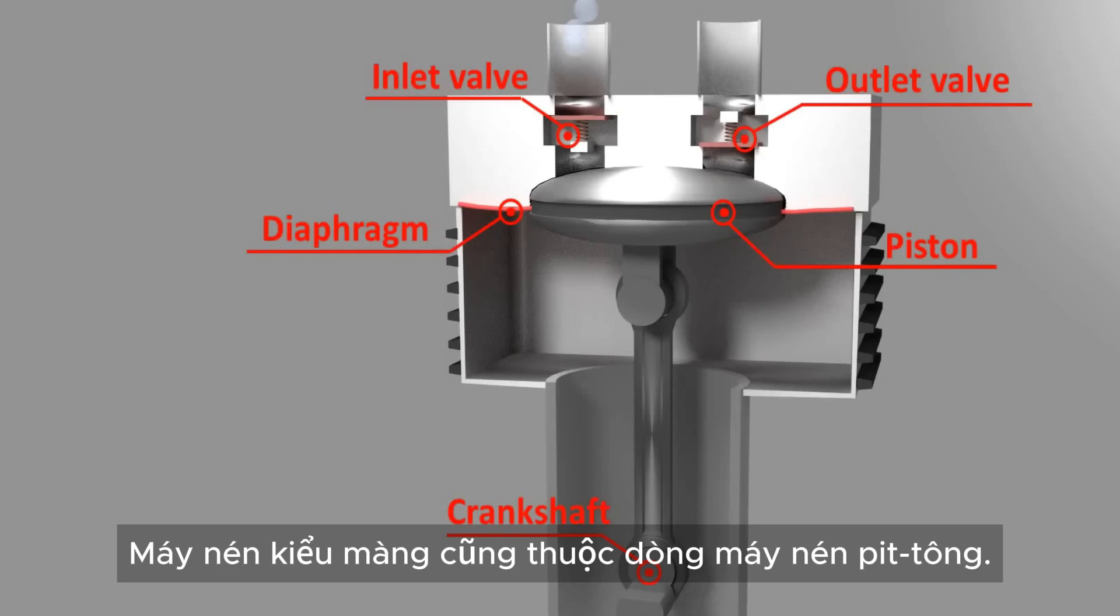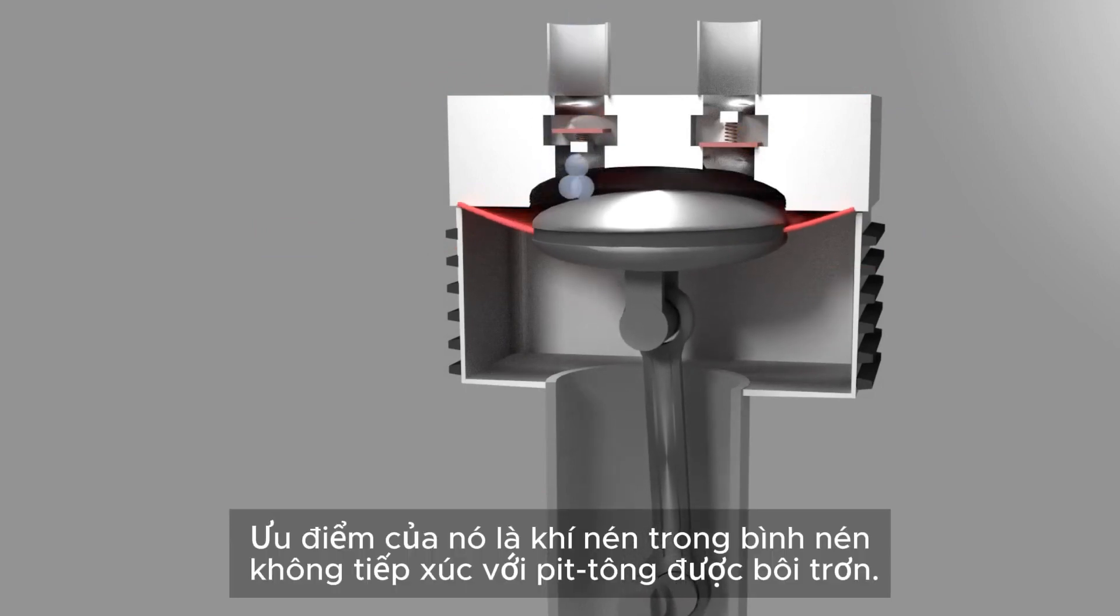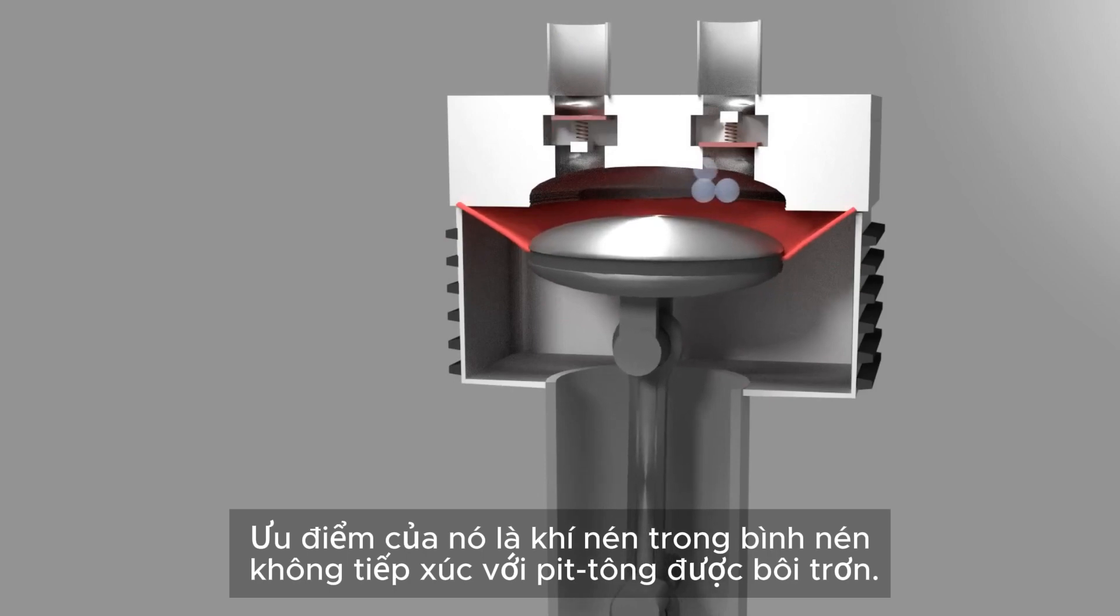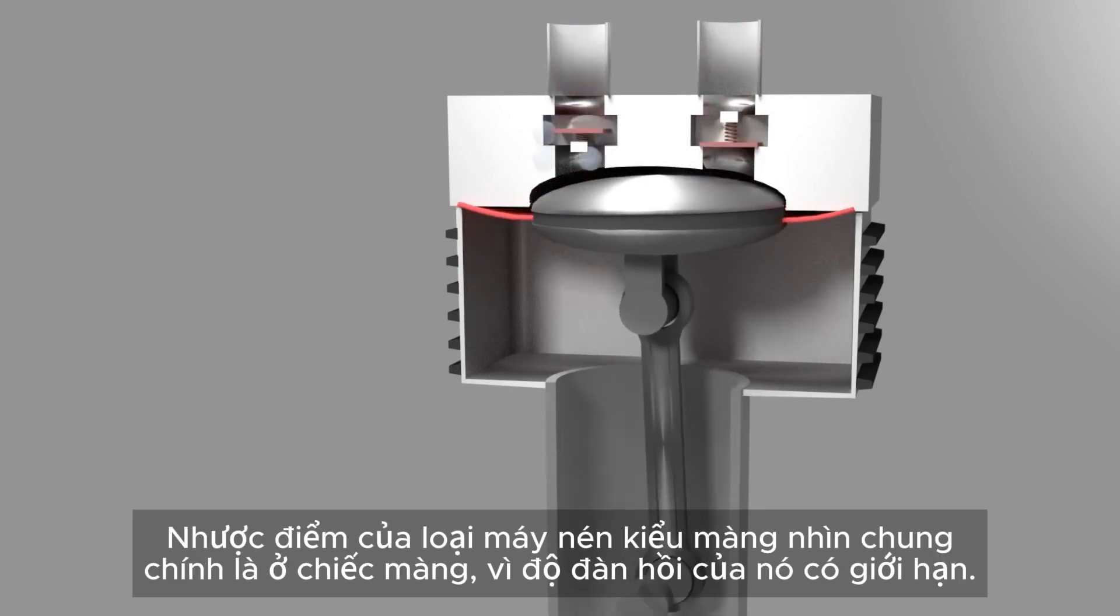The diaphragm compressor belongs to the family of the piston compressors. Here, the suction chamber is sealed from the piston by a diaphragm. As an advantage, the compressed air in the compression chamber does not come in contact with the lubricated piston, and thus can be kept free of oil.